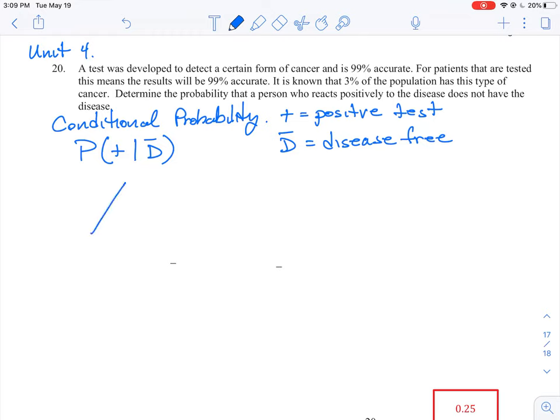So the first thing we have here is we have our population that basically says 3% of the population will get this disease. So we'll mark that by D and 0.97% of this population does not have that disease. We'll call that D bar.